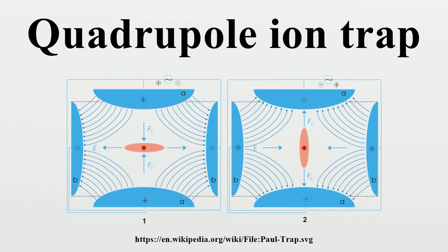It is possible, however, to create an average confining force in all three directions by use of electric fields that change in time. To do so, the confining and anti-confining directions are switched at a rate faster than it takes the particle to escape the trap. The traps are also called radio frequency traps because the switching rate is often at a radio frequency.